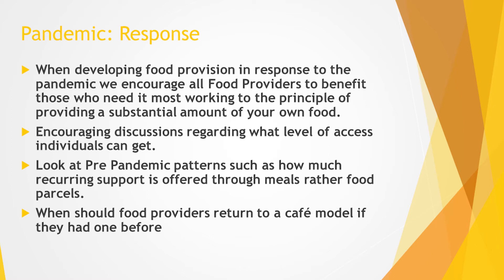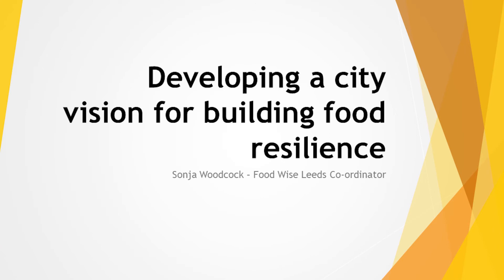Encouraging discussions around what level of access individuals can get and how much recurring support they can access is important. Should someone be able to get 52 food parcels a year, and what are the issues around sustainability and dependency? We should look at pre-pandemic patterns — for example, how much recurring support is offered through meals rather than food parcels. The community kitchen model, which will hopefully restart around June or July, is really important. Often that's the way recurring support is offered: a meal every day at the Crypt is not the same as getting a food parcel every week, which is probably more expensive.